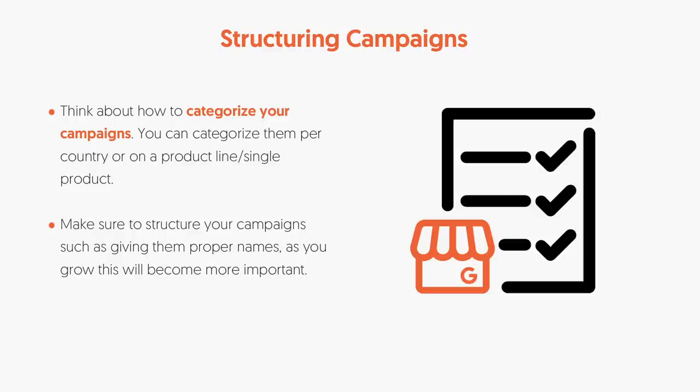When you're running campaigns through Google, you can structure them in many different ways. You can categorize them based on product line, regions you're targeting — the options are endless. Just make sure you keep things organized because you'll keep going back, tweaking and fine-tuning them, so your ads are driving the most amount of sales to your products.